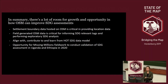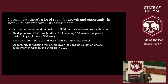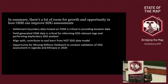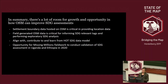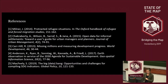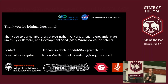To wrap up, there's a lot of room for growth from this preliminary assessment. The main takeaways are: settlement boundary data is critical for providing location data and knowing where to look for SDG indicators; field-generated OSM data is critical for offering more contextual analysis of these SDGs. Our goals with the Missing Millions project are to align with and learn from the HOT SDG data model, and there's an opportunity to conduct fieldwork next year to validate these analyses.